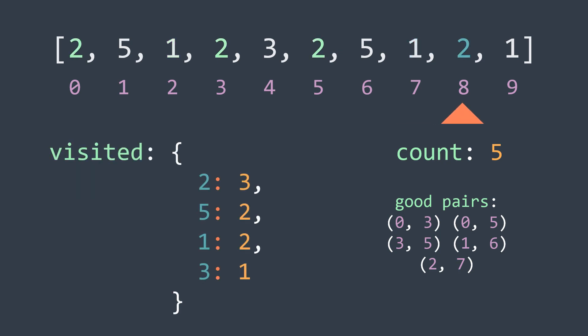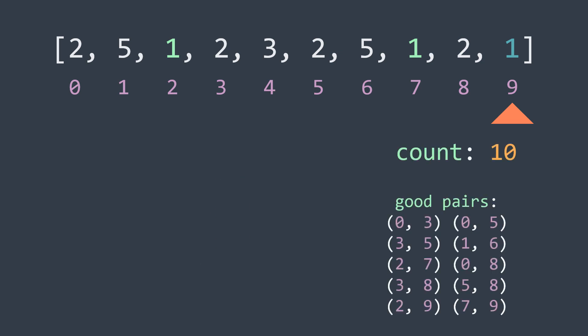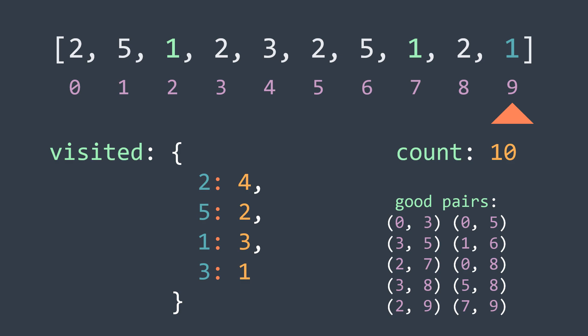Next, value 2 again — we've seen it three times before, so we add 3 and increment in the hash map. Last element, value 1 — we've seen it twice before, so we add 2 to the counter and increment. We finish traversing R, and we found 10 good pairs total, as visible at the bottom of the screen.